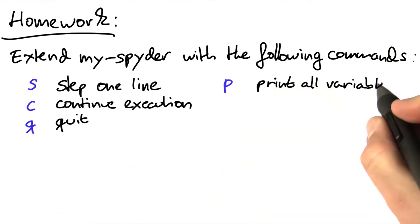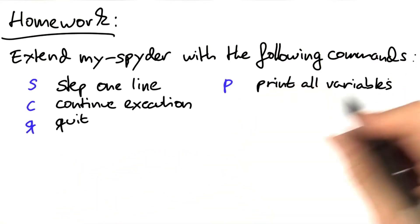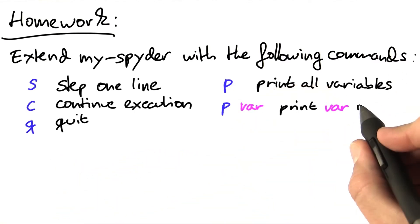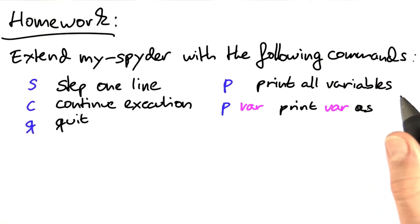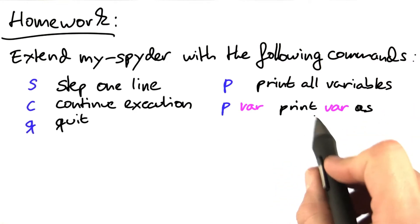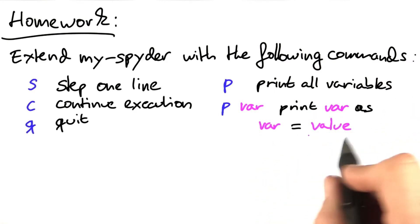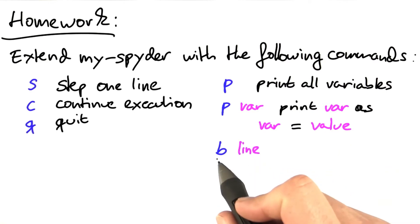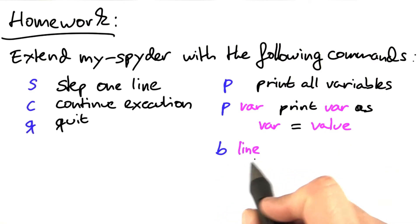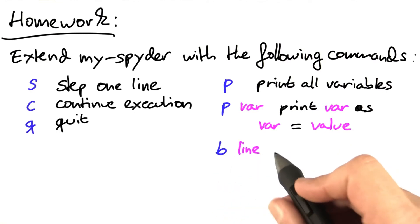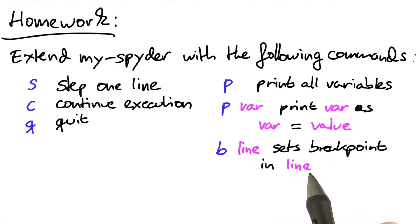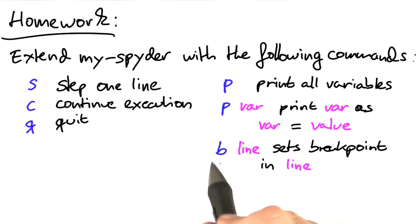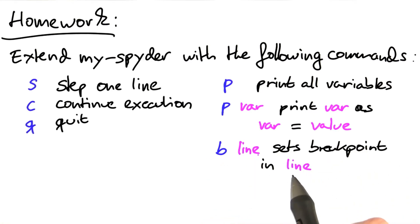Now come the extra commands. We have P for print all variables, and also with an extra argument, which should print the variable as 'variable equals value'. You want to have commands to set breakpoints. B at line sets a breakpoint in that line, meaning that after you enter this command, execution will always stop whenever that line is reached.